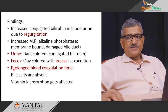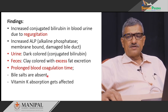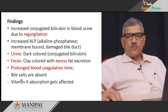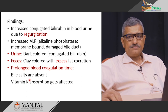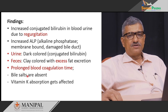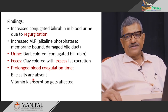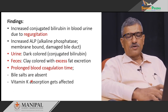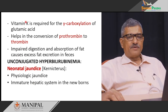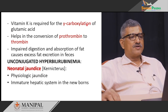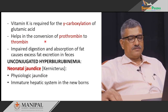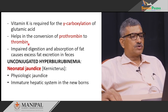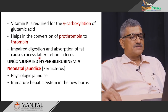In obstructive jaundice, we also see prolonged blood coagulation time. This is because vitamin K is a fat-soluble vitamin that requires bile salts for its absorption. Due to the obstruction of bile flow, bile salts are not secreted into the intestine, which impairs absorption of vitamin K. Vitamin K is required for blood coagulation as it helps in the gamma-carboxylation of specific glutamic residues of prothrombin, a clotting factor, which converts prothrombin to thrombin.